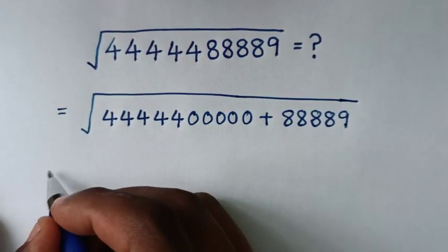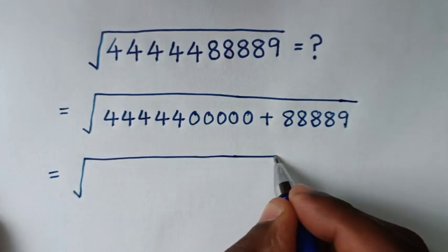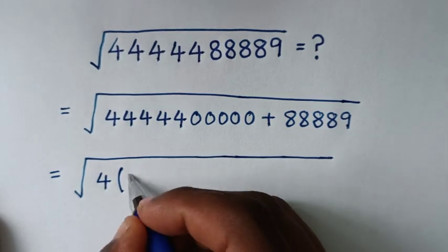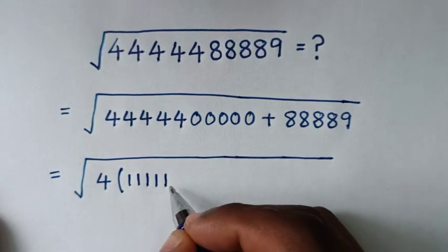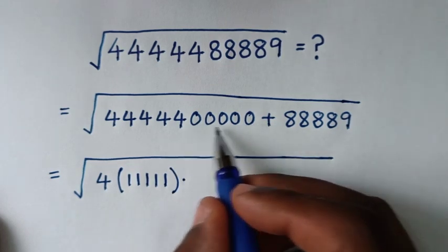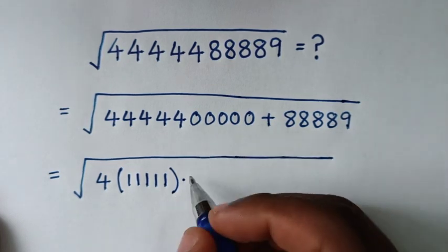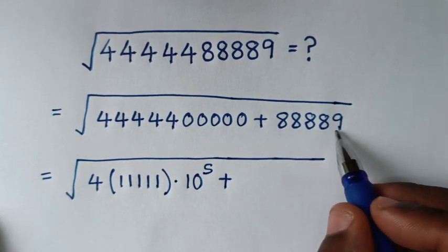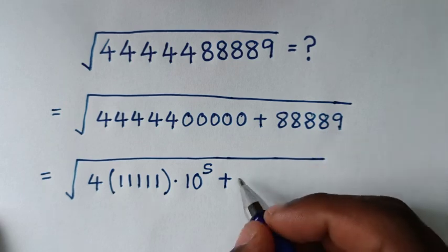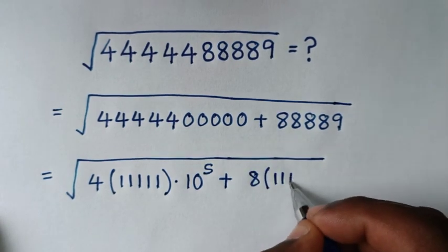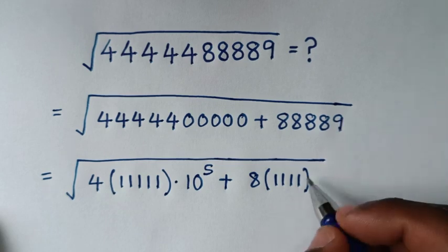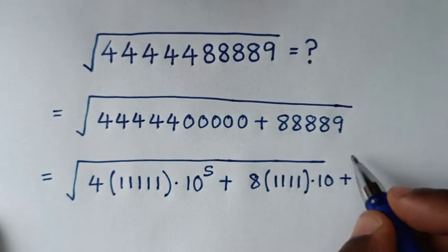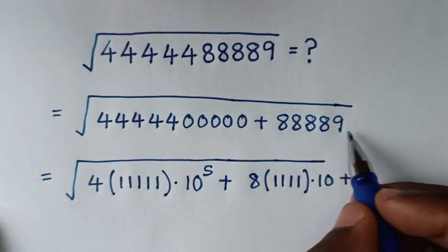In the next step, it will be equal to the square root of: these 4s are five, so it is 4 times bracket 11111 — five 1s — times 10 to the power 5, plus these 8s — four 8s — so it is 8 times bracket 1111 times 10, plus this 9. This expression is the same as our original number.